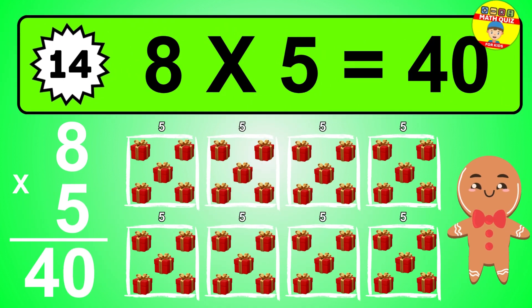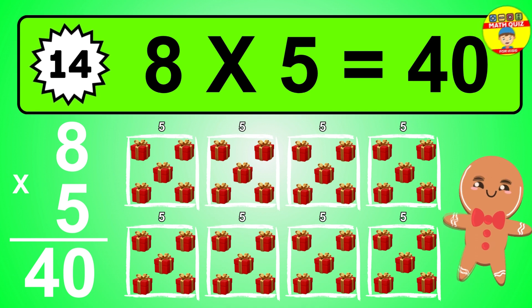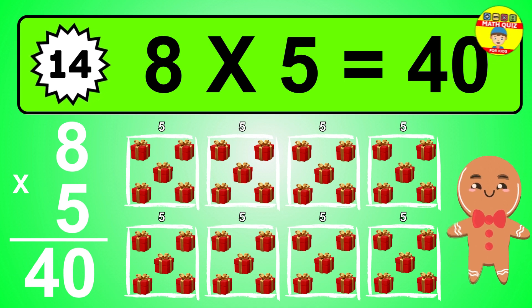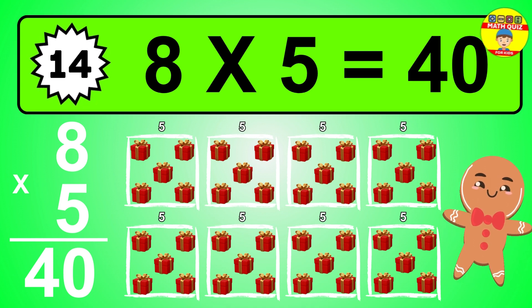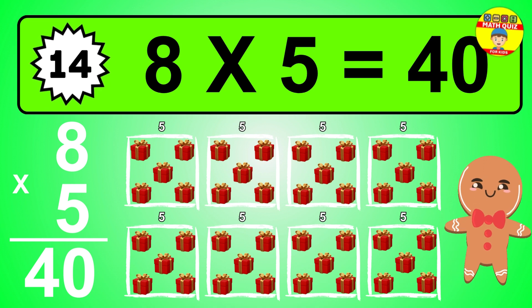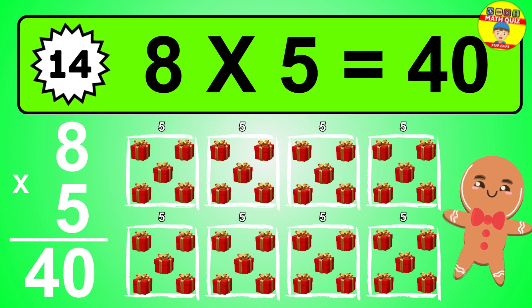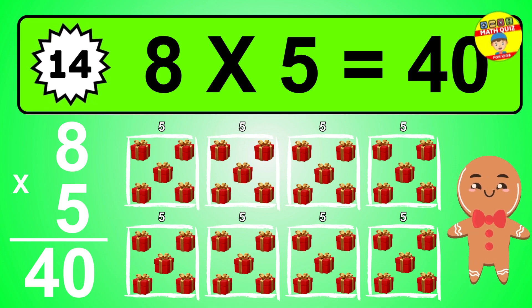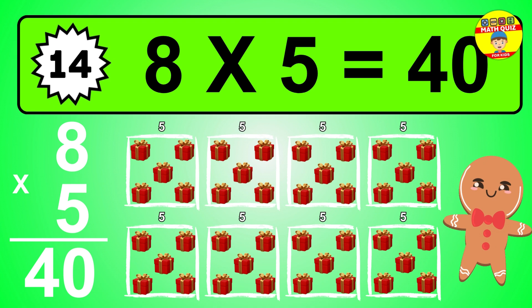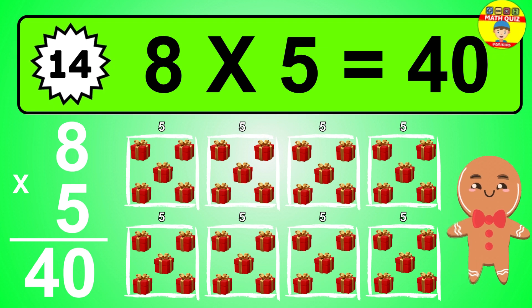The answer is eight times five is forty. To calculate, we have eight groups with five balls each one. So how many balls do we have? Forty balls.